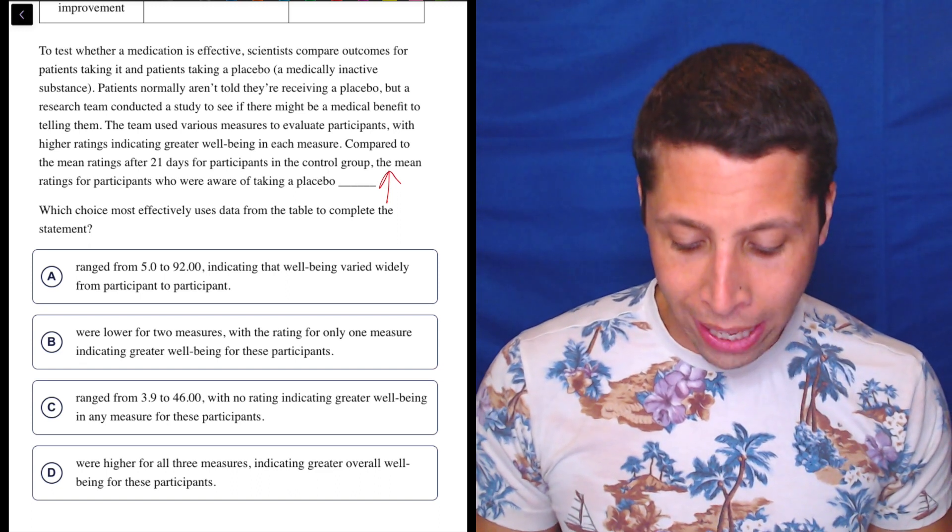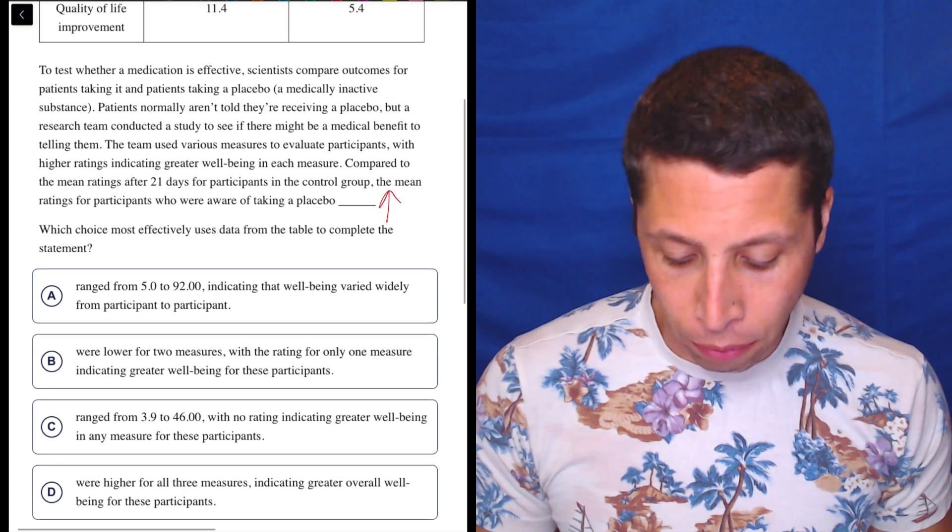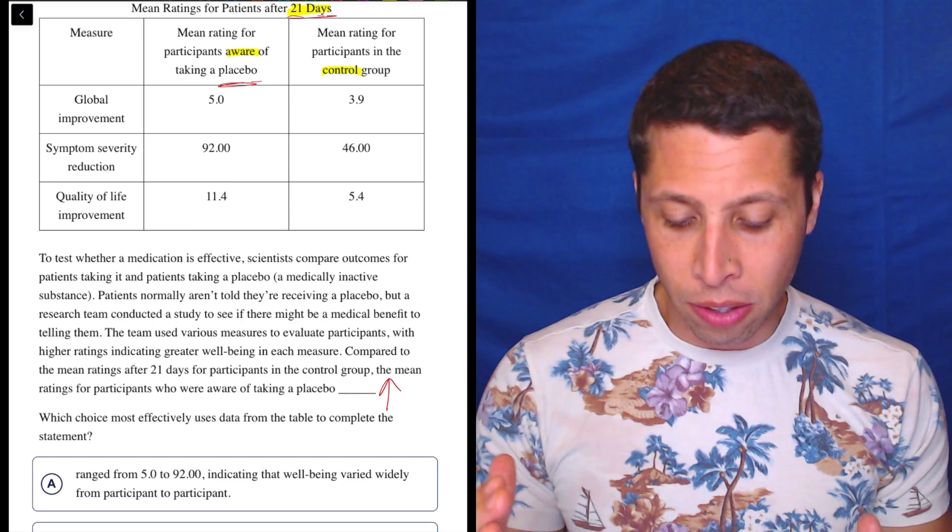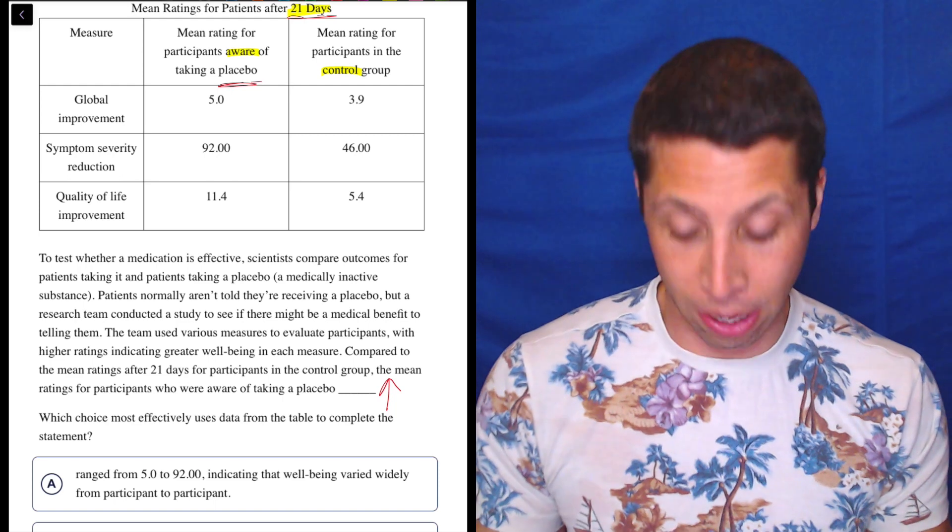Those who are aware of taking a placebo range from 5 to 92 indicating that well-being varied widely from participant to participant. No, I mean, the 5 to 92 is the same group. It's not about different participants. It's just different ways of measuring things, right?